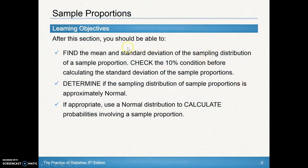In this video, we're going to look at how to find the mean and the standard deviation of a sampling distribution of a sample proportion — in other words, finding the mean of p-hat and the standard deviation of p-hat. In order to do so, we're going to have to check that 10% condition, meaning that 10 times our sample size is still less than or equal to our population before doing any of the calculating on the standard deviation of sample proportions.